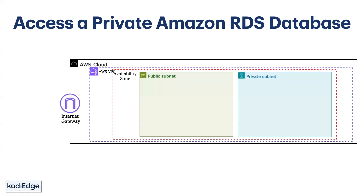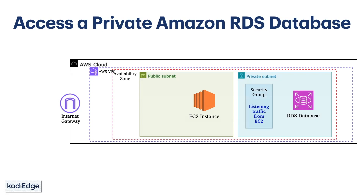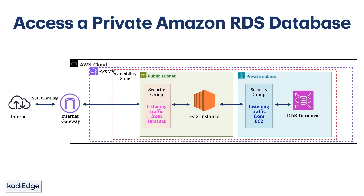In the private subnet we will deploy our RDS database. For demonstration I am going to use MySQL. In the public subnet we are going to deploy one EC2 instance which we will use to connect to the RDS database from our local machine. We will have a security group which will allow traffic only from the EC2 instance to the database, and another security group for the EC2 instance which will allow traffic from the internet to the EC2 instance.